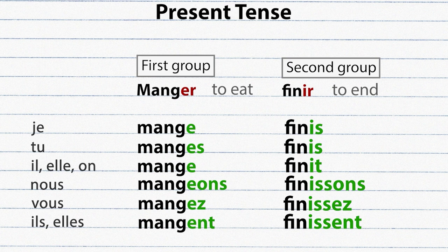Notice how four of the six conjugations often pronounce the same. And for this reason the subject pronouns cannot be omitted in French.